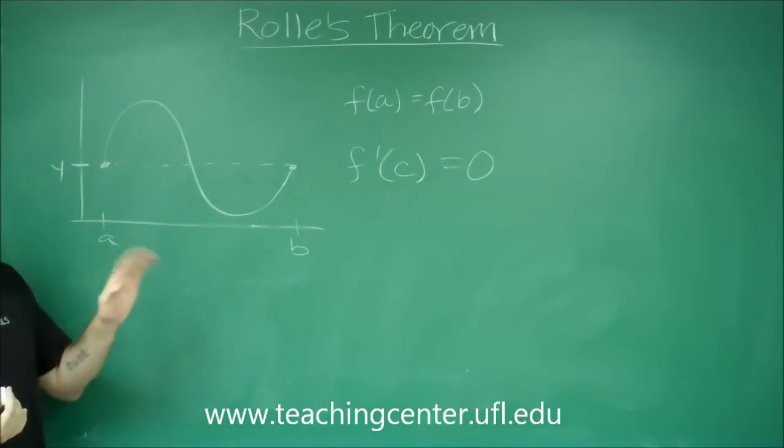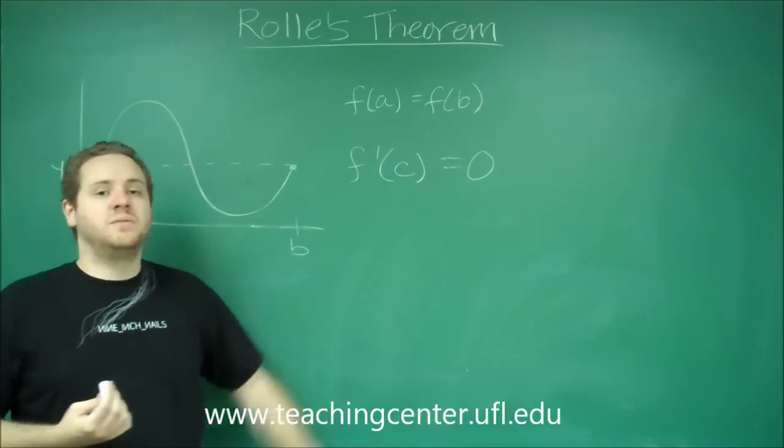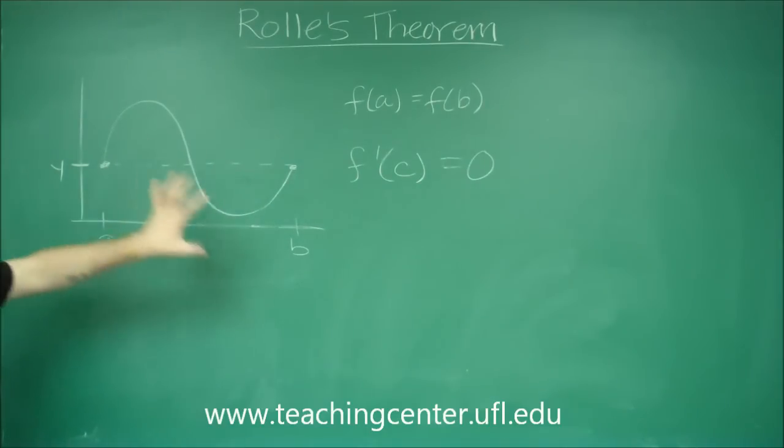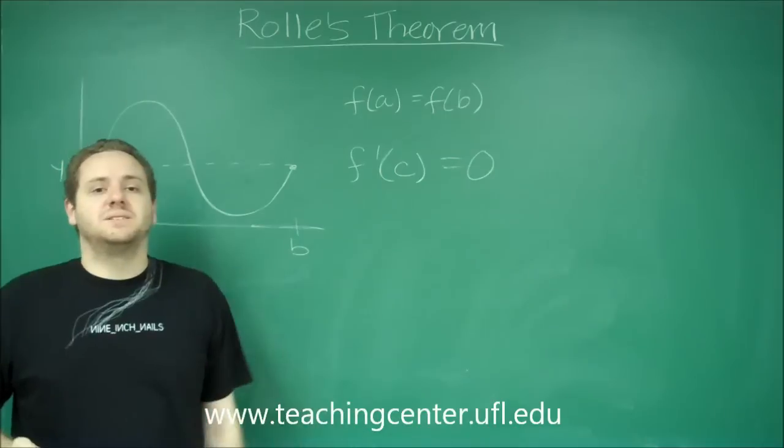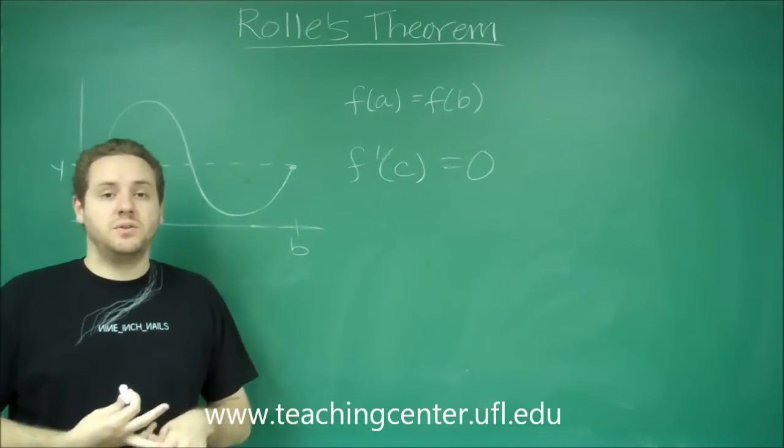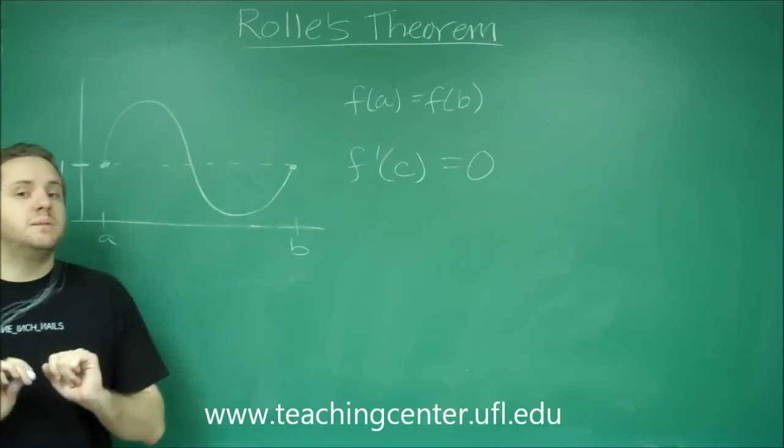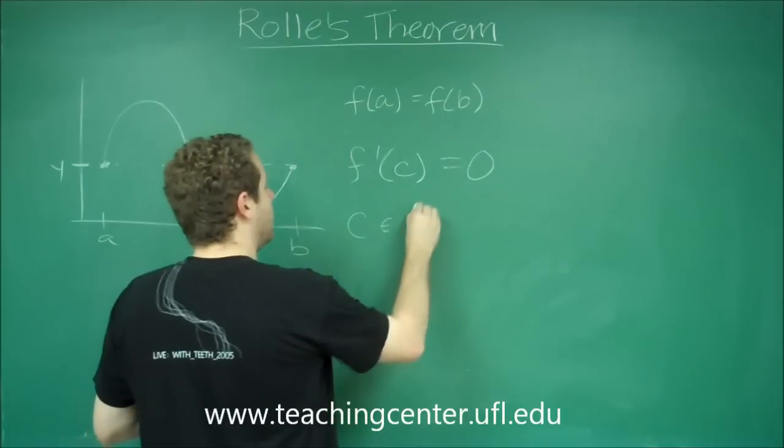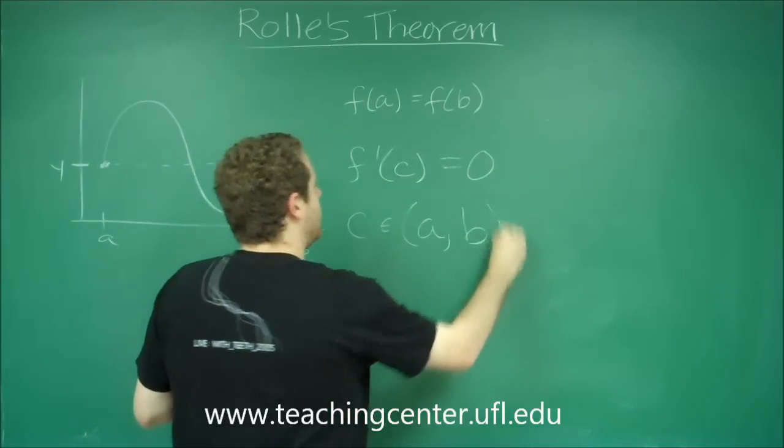But remember, Rolle's Theorem only guarantees that your derivative is going to be zero for sure somewhere in between here. So if you have a function and you take its derivative and set it equal to zero and you get a few values, the only ones guaranteed by Rolle's Theorem are the ones that were in the interval a to b.